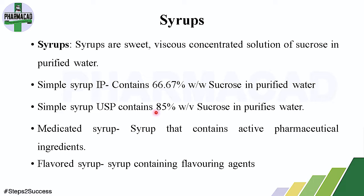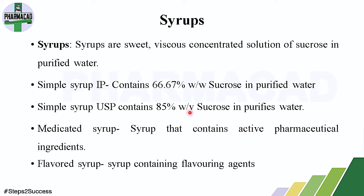The content of Simple Syrup IP and Simple Syrup USP varies. Simple Syrup IP contains 66.6% weight by weight sucrose in purified water. Simple Syrup USP contains 85% weight by volume sucrose. The difference is both in percentage and in the method of measurement — IP is weight by weight, USP is weight by volume.